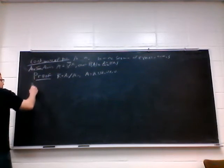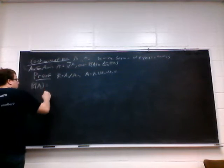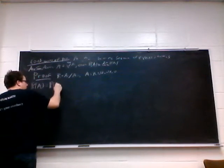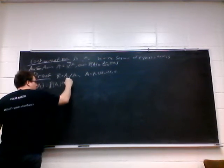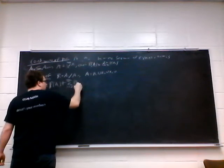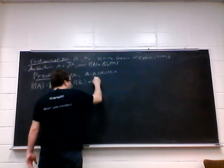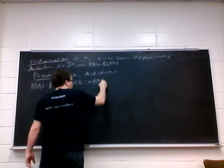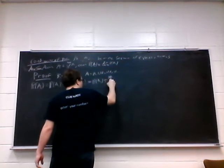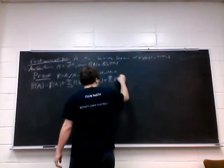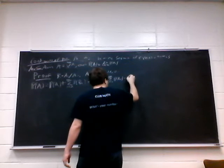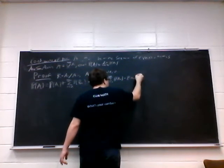So the probability of a is equal to the probability of a1 plus the sum of the probability of bk. This is equal to probability of a1 plus the sum of the probability of a sub k minus the probability of a sub k minus 1.